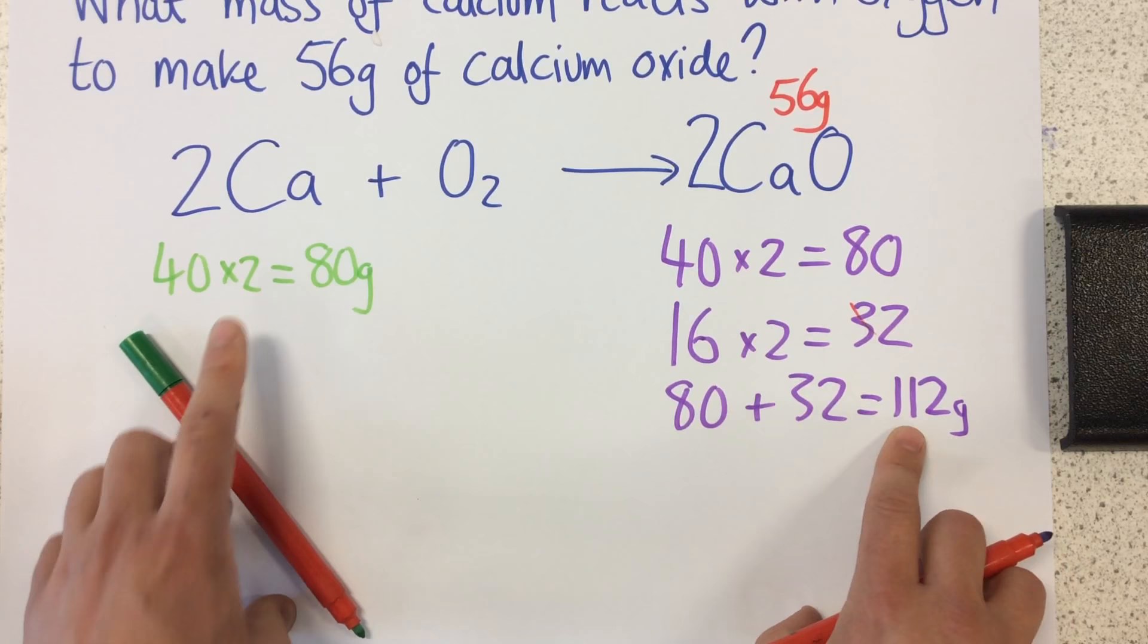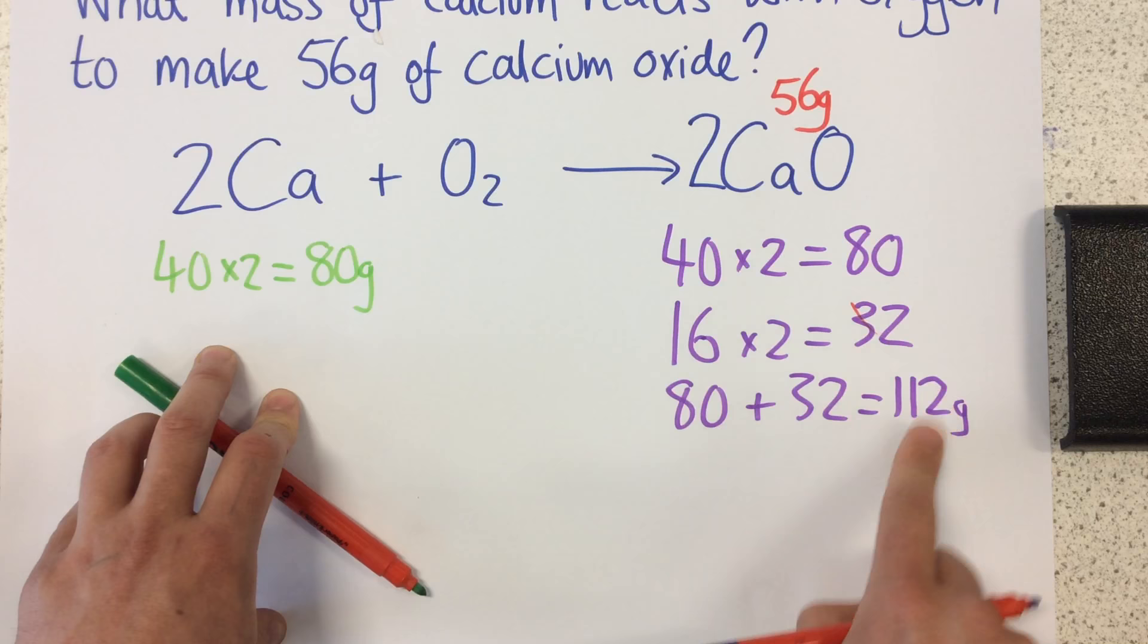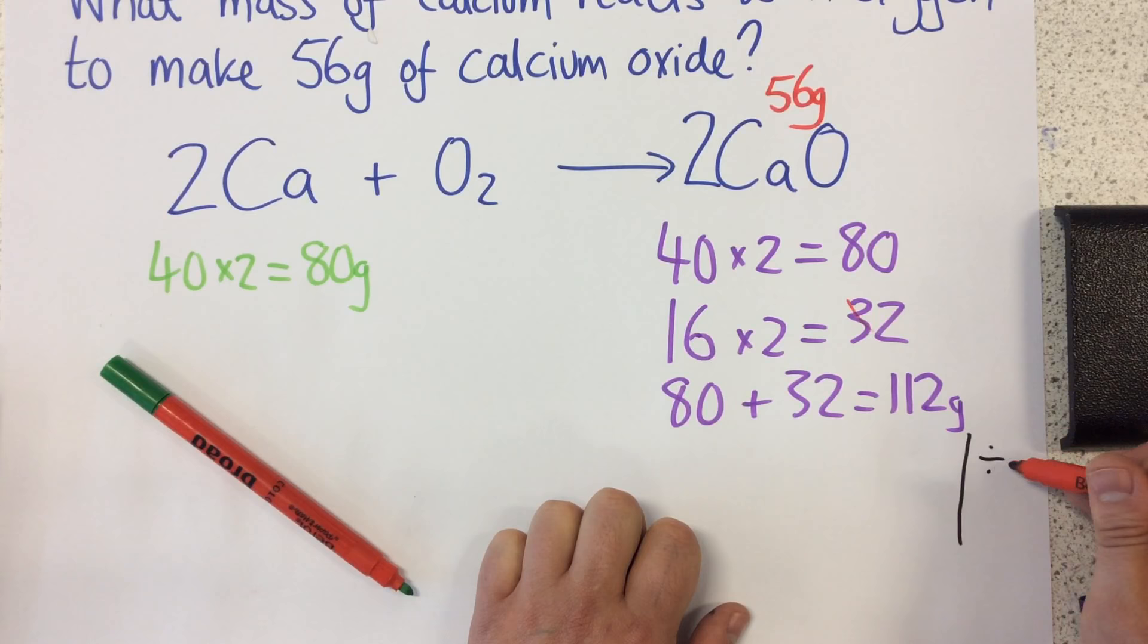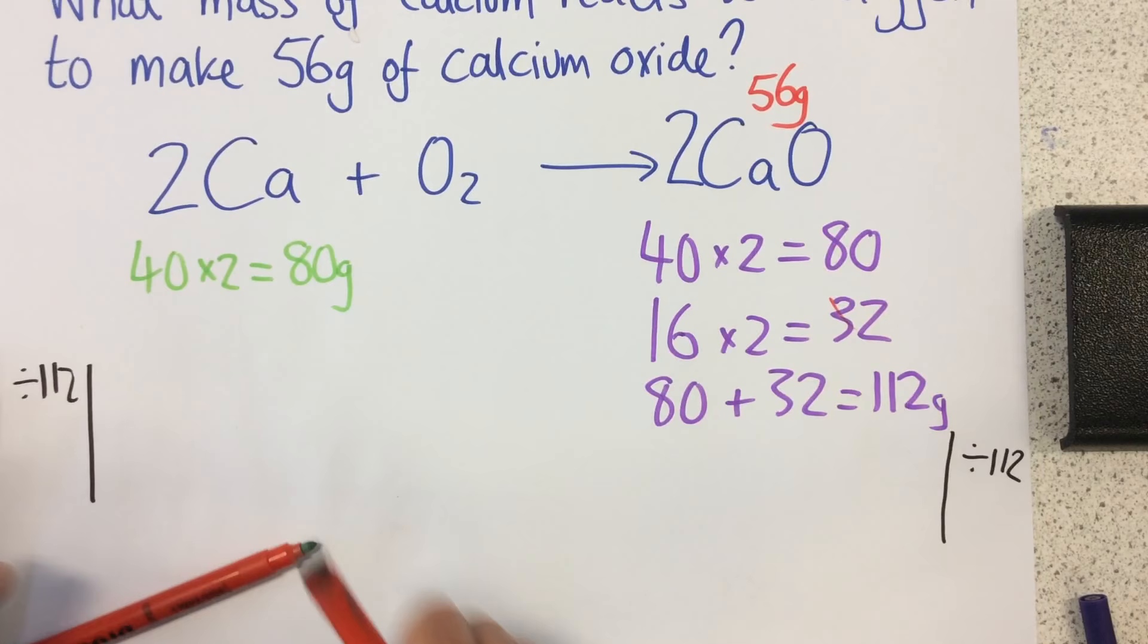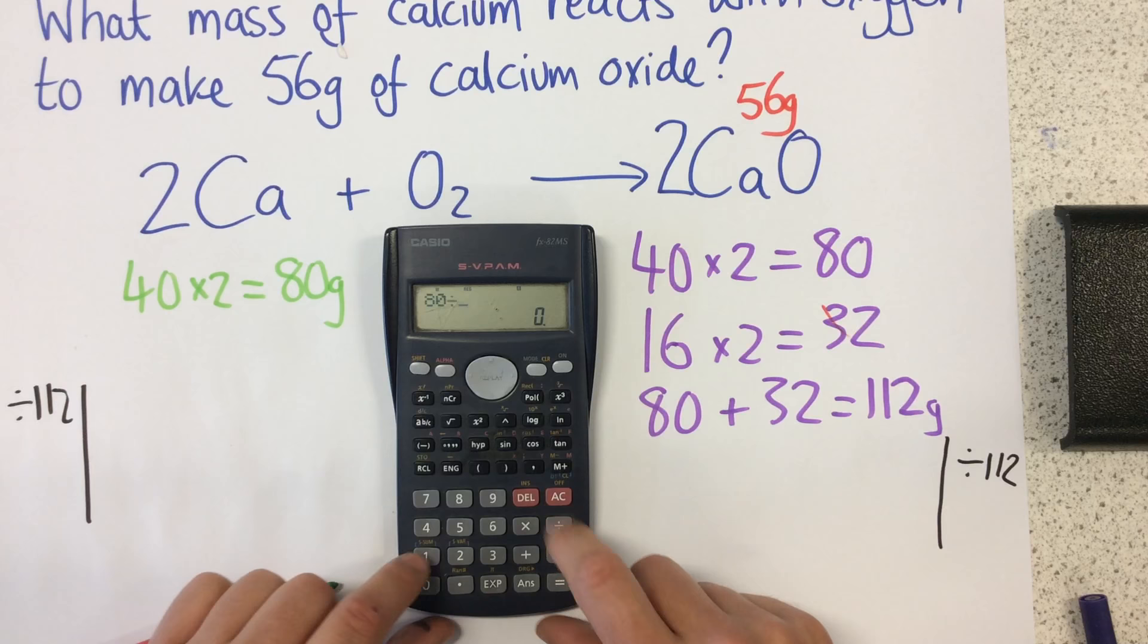So the first thing I need to do is see how much calcium would I need to make just one gram of this. So how do I do that? Well, I divide both by 112. So in my calculator I'm going to do 80 divided by 112.